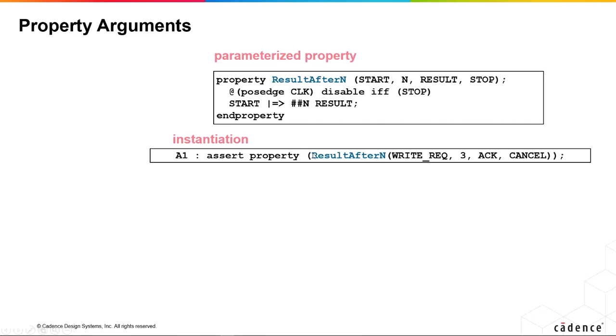and then we instance it. And when we instance it, we map write_rec to start, three to N, ACK to result, and cancel to stop.